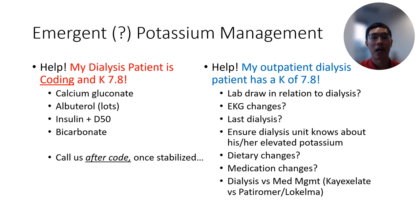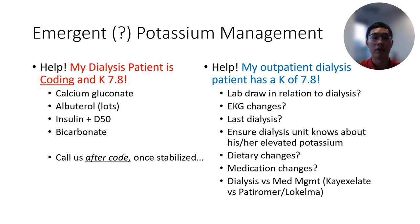Now let's discuss electrolyte management and how dialysis actually works to correct somebody's electrolyte issues. Consider two different scenarios. On the left, we have a dialysis patient who is coding and incidentally has a potassium of 7.8. If you are actively coding a patient, it is important to remember that dialysis will be unlikely to save this patient from their code, and medical management will be the faster and preferred method of resuscitation to lower the patient's potassium. Once resuscitation is complete, please feel free to call us to arrange for emergent dialysis. On the right, we have an outpatient dialysis patient with a high potassium level of 7.8. Before reacting, it is important to ask yourself if this was an incidental finding and when the lab was drawn in relation to their last dialysis session. Most of the time, the patients have already received their next dialysis treatment or are about to receive it, in which case the abnormal lab value becomes a moot point.